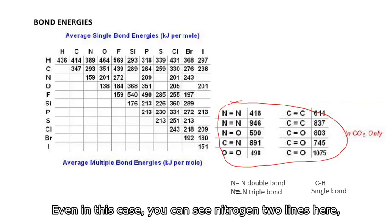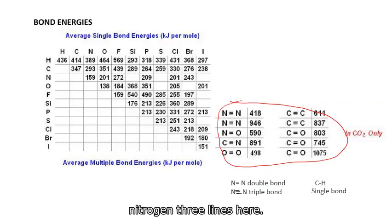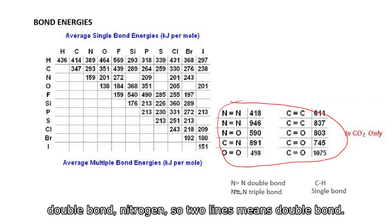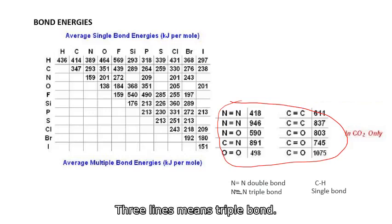So even in this case, you can see nitrogen, two lines here, nitrogen, three lines here. So each case is different. So if it is nitrogen double bond nitrogen, two lines means double bond. Three lines means triple bond. If it's only one line that is single bond. So we will learn more about this one in bonding chapter next week. So each one is different.